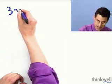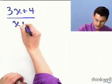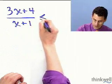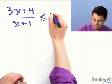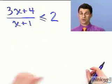Suppose that I wanted to find all the values for x so that 3x plus 4 all divided by x plus 1, all that value is going to be always less than or equal to 2. So I want to find all the x's that I can plug in here so that this thing is always true.